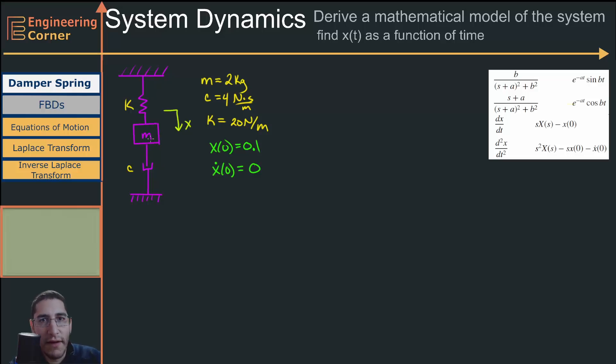In this video, I'd like to derive a mathematical model of this system, which is a mass-spring-damper system. But this time, unlike a lot of the videos I've done, I'm given actual numbers. So I'll have a numerical expression when I find x(t), which is my position as a function of time.